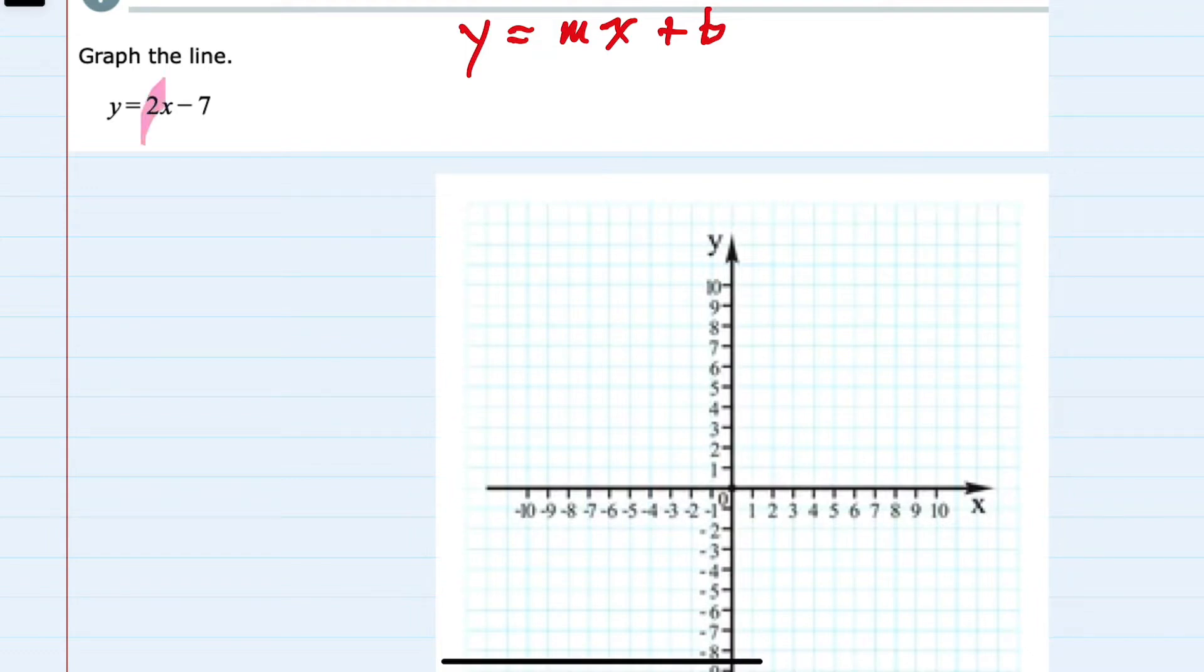So here our m is 2, and our y-intercept b is minus 7. And the one other thing that we need to note is that our slope m is rise over run.